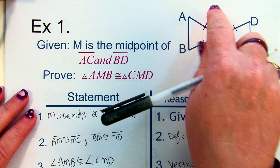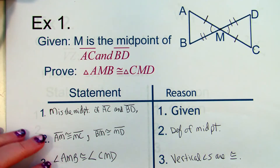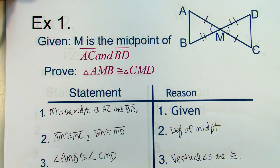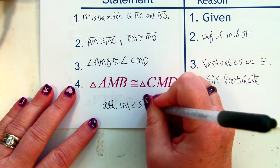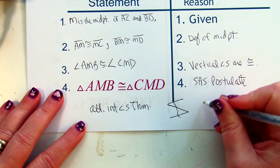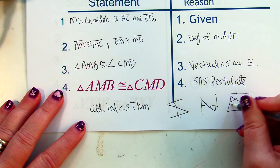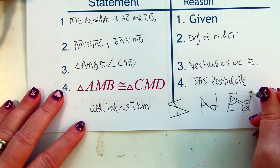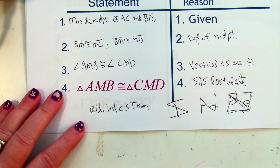We learned about midpoint — it makes two segments congruent in the middle. We're also going to use parallel lines on one of the proofs, so you have to remember your alternate interior angles theorem. When it's like a zigzag or an N shape, those angles are congruent because of the alternate interior angles theorem. That'll come up on one of the proofs.